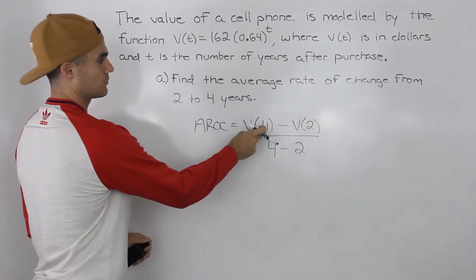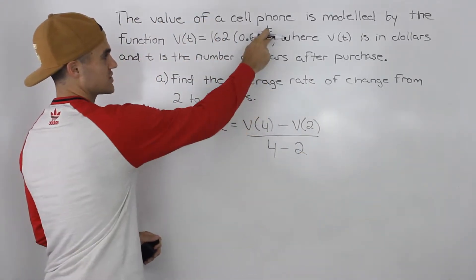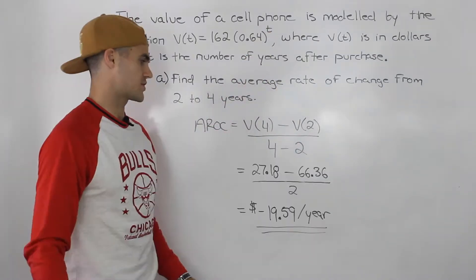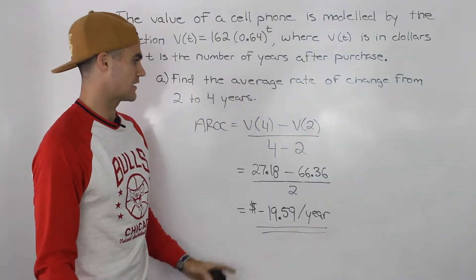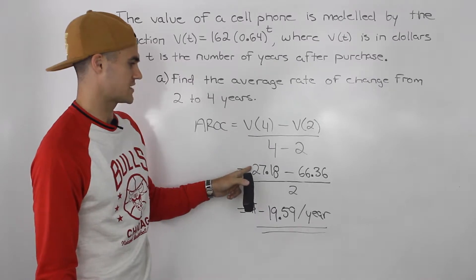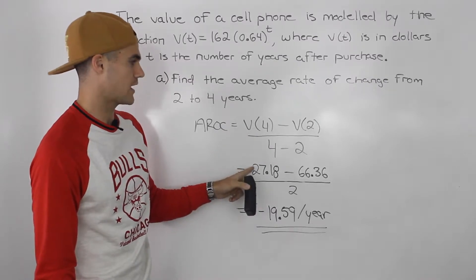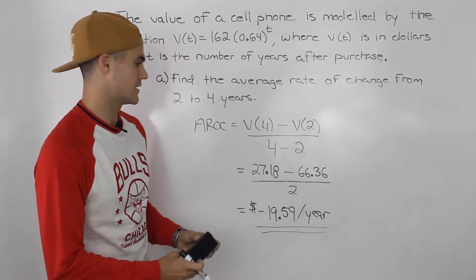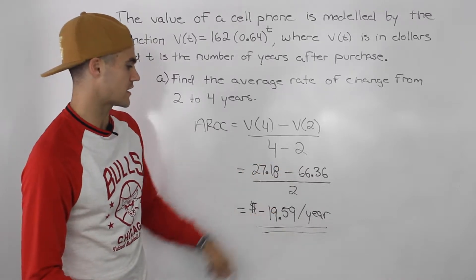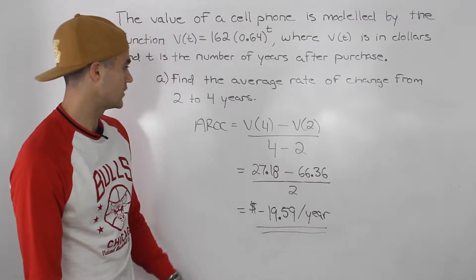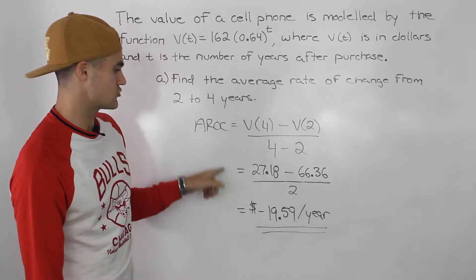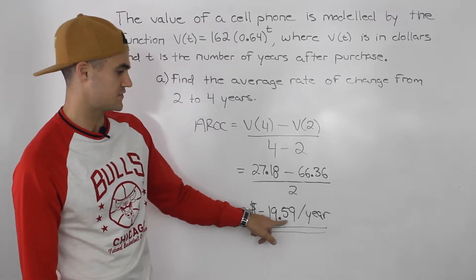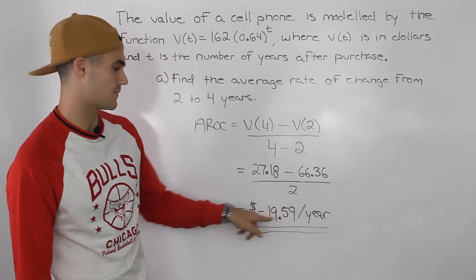To find V(4), we plug in four for T. To find V(2), we plug in two for T. When you plug those into your calculator, V(4) would be 27.18 and V(2) would be 66.36. Subtracting those and then dividing by two, you get an average rate of change of negative $19.59 per year.